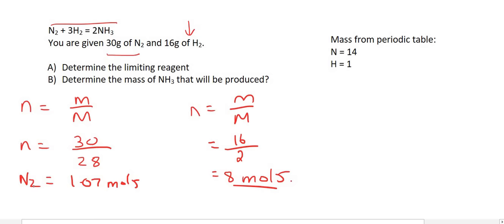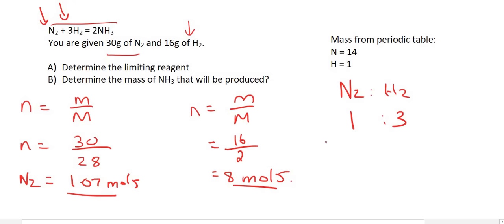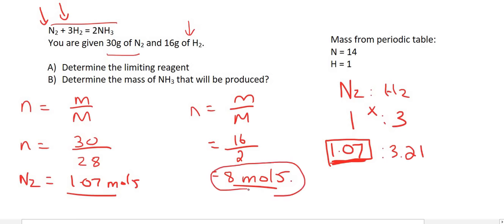Now let's see which one is limiting. We write out nitrogen and hydrogen with a molar ratio of 1 to 3. Choosing nitrogen: if we use all 1.07 moles of N₂, we'd need 1.07 times 3 = 3.21 moles of hydrogen. We have 8 moles — more than enough. So hydrogen is in excess and nitrogen is limiting.